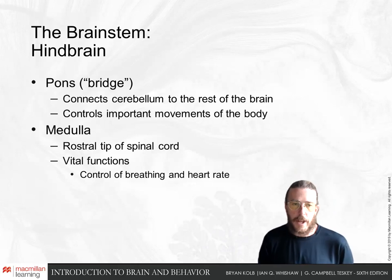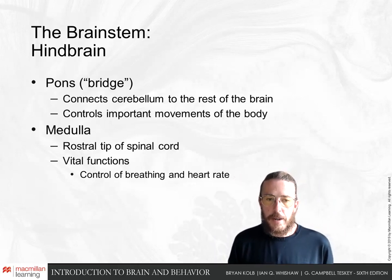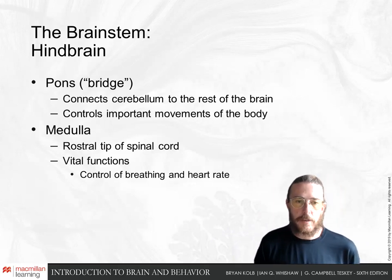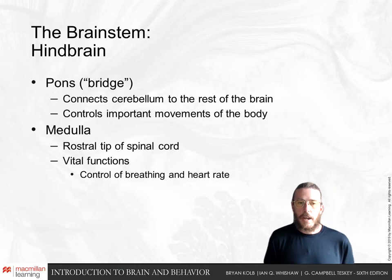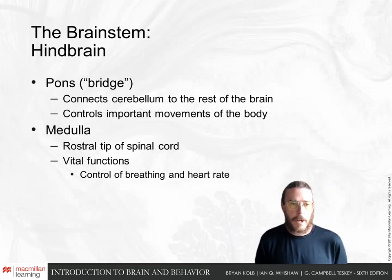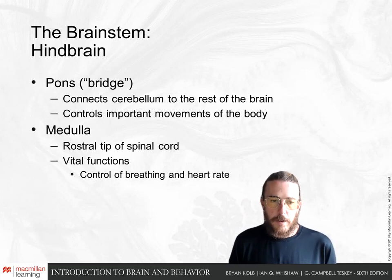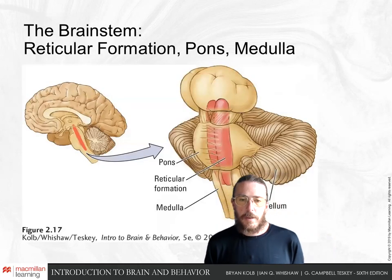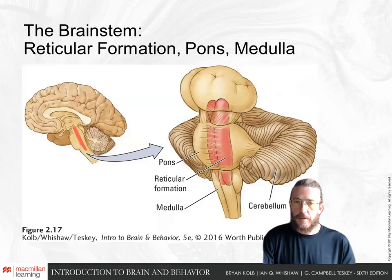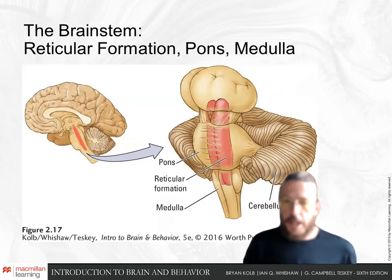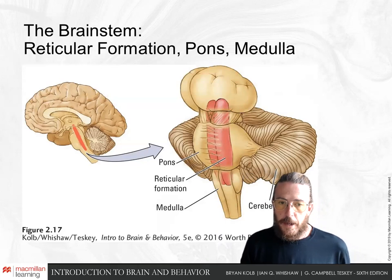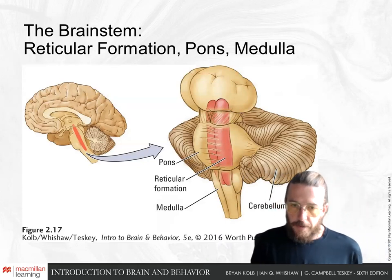The medulla is at the most rostral tip of the spinal cord — closest to the head — and controls things like breathing and heart rate. A blow to the head can damage the medulla and cause unconsciousness. Many dangerous drug overdoses are caused by inhibition of regions of the medulla. In diagrams, the reticular formation appears as hotdog-like structures of small neuron groups and their axons going up to the cortex; the pons connects on either side to the cerebellum, with the medulla structures at the very bottom of the brain stem.